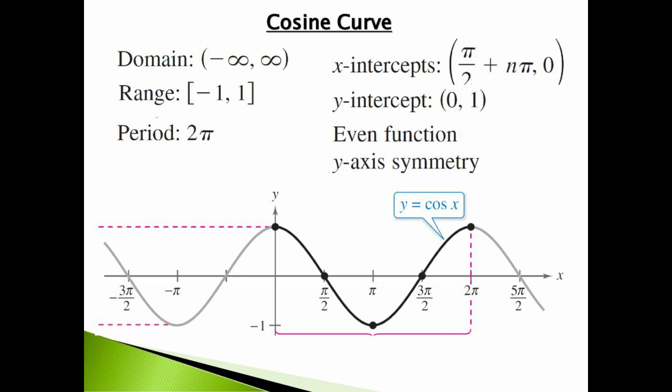The x-intercepts are the points where the curve cuts the x-axis: on the right side, these are π/2, 3π/2, 5π/2, 7π/2, etc.; on the left side, they are −π/2, −3π/2, −5π/2, −7π/2, etc. So all odd integral multiples of π/2 are the x-intercepts of the cosine curve. The y-intercept is (0, 1). The cosine function is an even function because cos(−θ) = cos θ. The image of every point on the right of the y-axis is on the left side, so the axis of symmetry for the cosine curve is the y-axis.